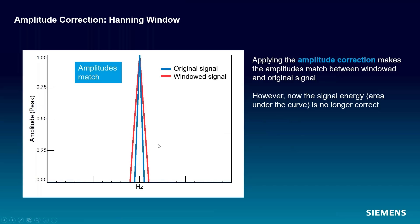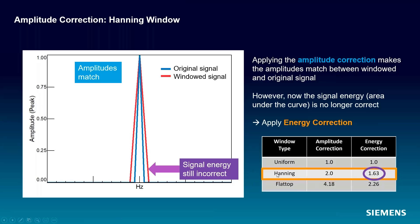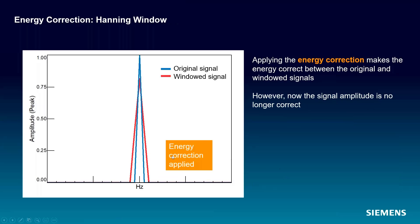As we saw in the software, but now the signal energy doesn't look right. So we can apply energy correction, but of course it's one or the other - we can either get the correct energy or the correct amplitude, but you can't do both at the same time. That's important to keep in the back of your mind.